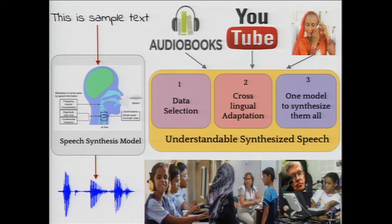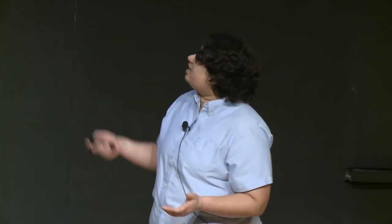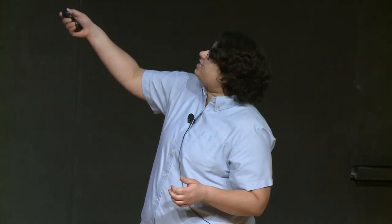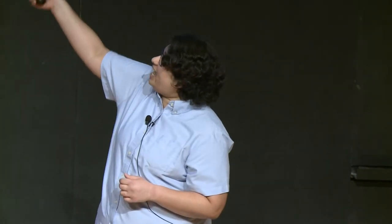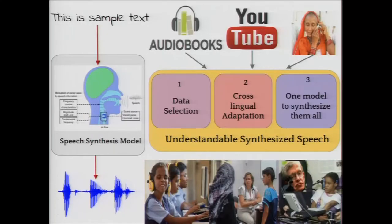More than 6,500 languages are spoken around the world. Out of these, less than 40 languages are supported by companies such as Google and Microsoft for speech synthesis. Speech synthesis basically involves learning a statistical model of the human vocal production mechanism such that it can take in some text and vocalize it as speech. The parameters of this model are trained using pairs of text and its corresponding speech. These text prompts are designed to be phonetically balanced while the speech is recorded from a native speaker of the language in a recording studio.